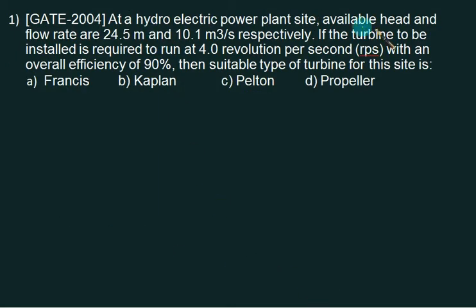In this question we have to find out which turbine will suit for us and we are given the data for head, discharge, speed, and overall efficiency. So what we do is that we know the standard value of specific speed. So we will calculate a specific speed and from the specific speed we can find out which type of turbine will suit for us.